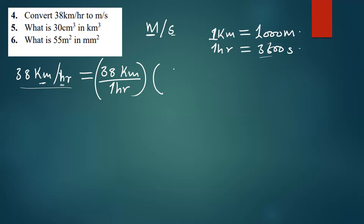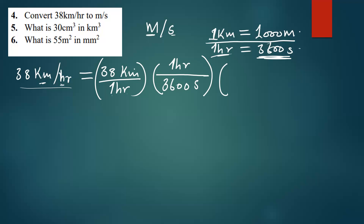We know that one hour makes up 3600 seconds, so I'm going to write one hour on top. The reason I'm putting one hour on top is so it will cancel with the one hour in the denominator. The denominator there will be 3600 seconds. Then for the other conversion factor, one kilometer is the denominator so it cancels with the kilometer in the numerator, and I write the 1000 meters on top.